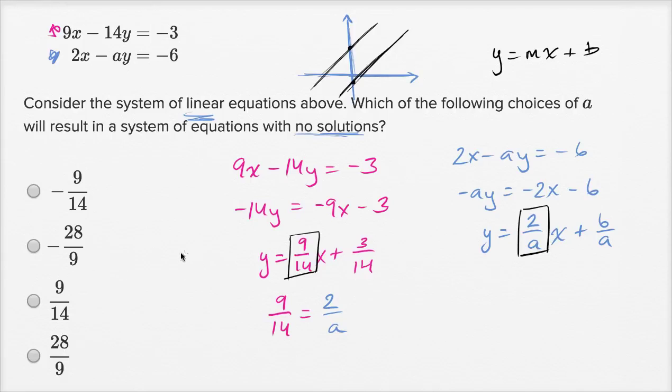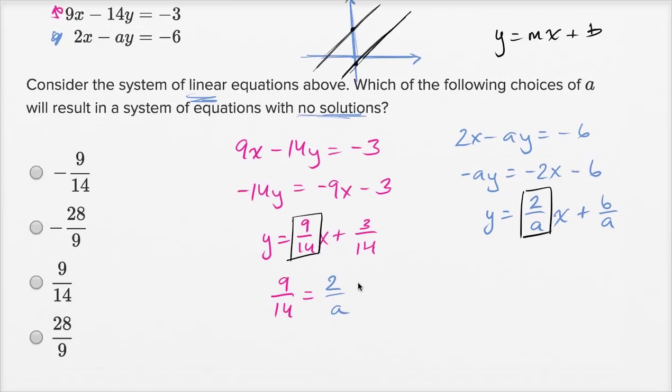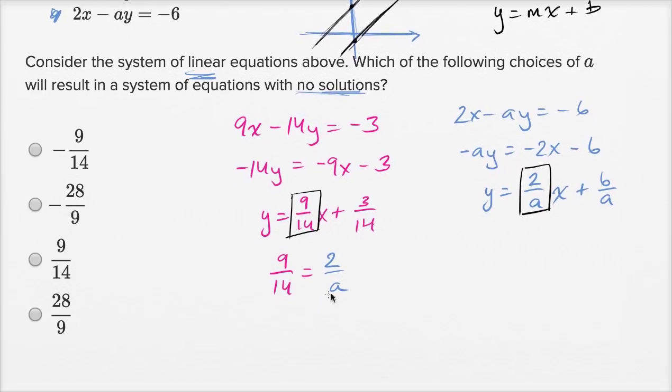Or another way of thinking about this, we could take the reciprocal of both sides. So we could have, and actually let me swap both sides. So we could say a over 2 is equal to 14 over 9. Is equal to 14 over 9.